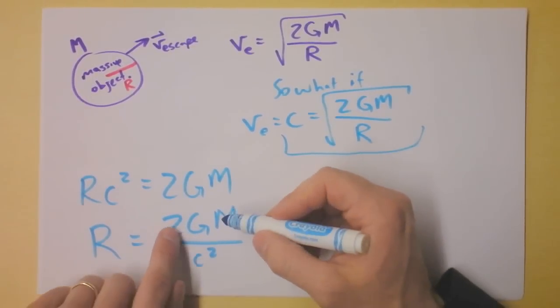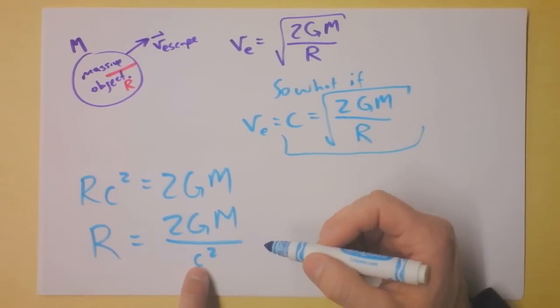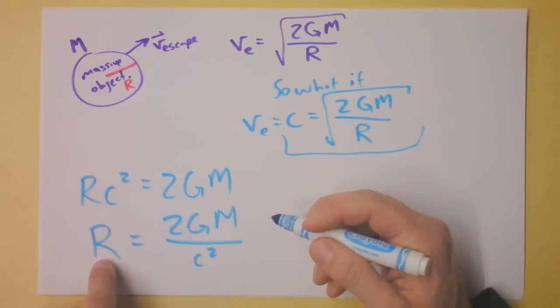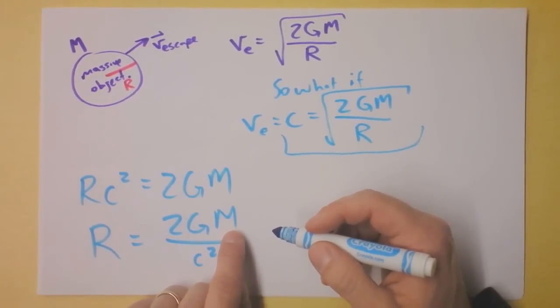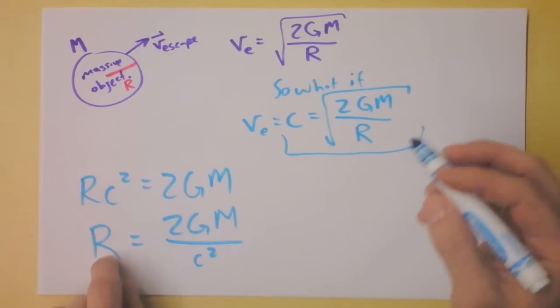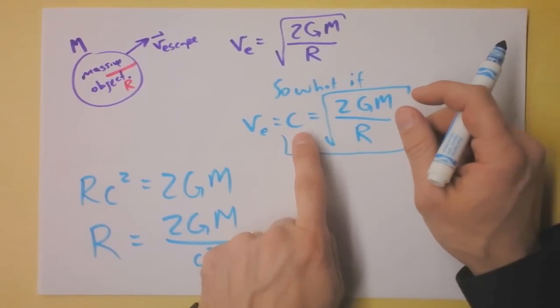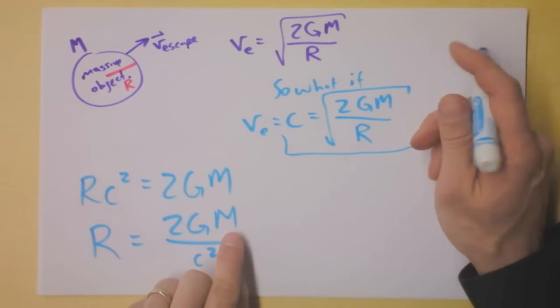This is going to make this radius fantastically small. G is 10 to the negative 11th or so and the speed of light is 10 to the eighth and that's in the denominator and it's squared. We have ourselves a very small radius unless this mass is incredibly big. So for typical things the distance at which light would not be able to escape, any distance closer than this distance light can't get out of, is incredibly small.